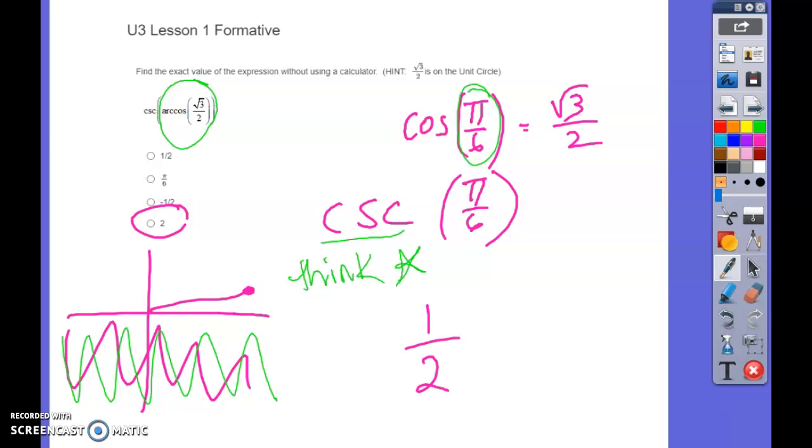The reciprocal of cosecant is sine. So you're going to think, what's the sine of pi over 6? And then you're going to flip it. The sine of pi over 6 is 1/2, and the reciprocal of that is 2.